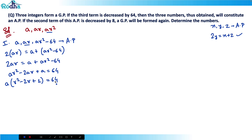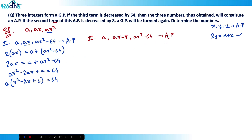For condition two: the second term of this AP is decreased by 8 to form a GP again. The AP terms are a, ar, and ar² − 64. So the new sequence is a, (ar − 8), and (ar² − 64), which is in GP. For three terms in GP, the middle term squared equals the product of the extremes.